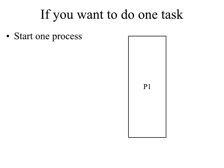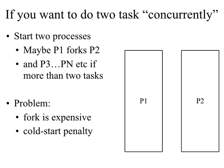The problem we are trying to solve is how do we execute multiple tasks concurrently. The traditional way would be to start one process per task. If you had two tasks you might fork one process from another, and if you had n tasks you would create n processes, one for each task. The problem with this approach is that you may have to use the fork system call to create multiple processes.